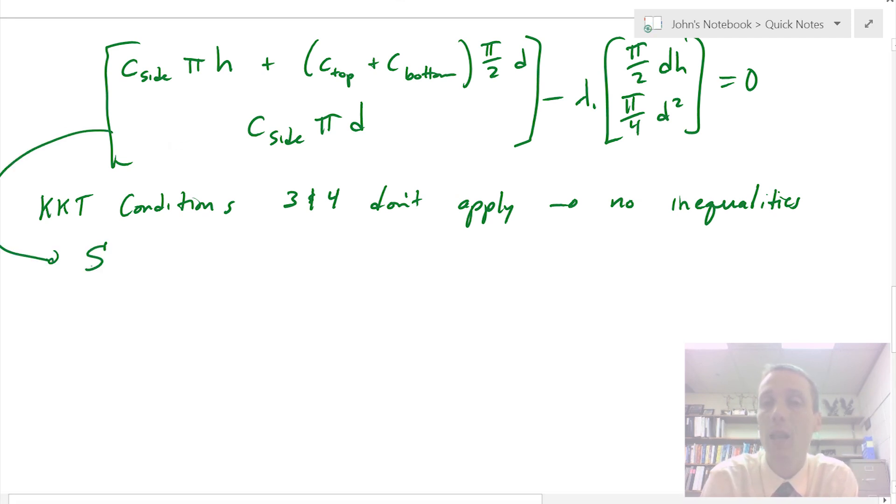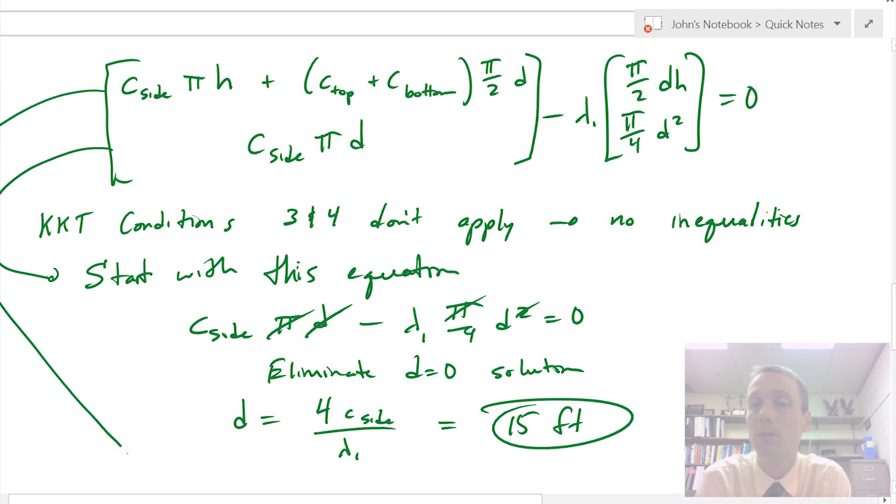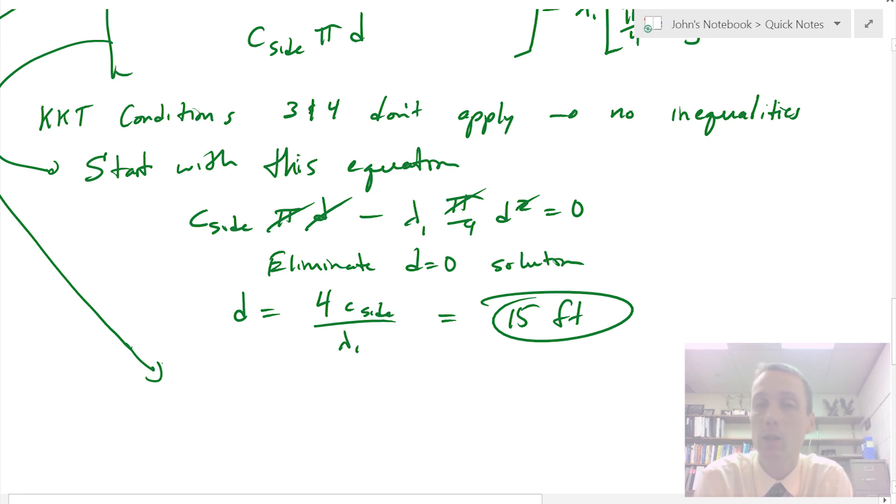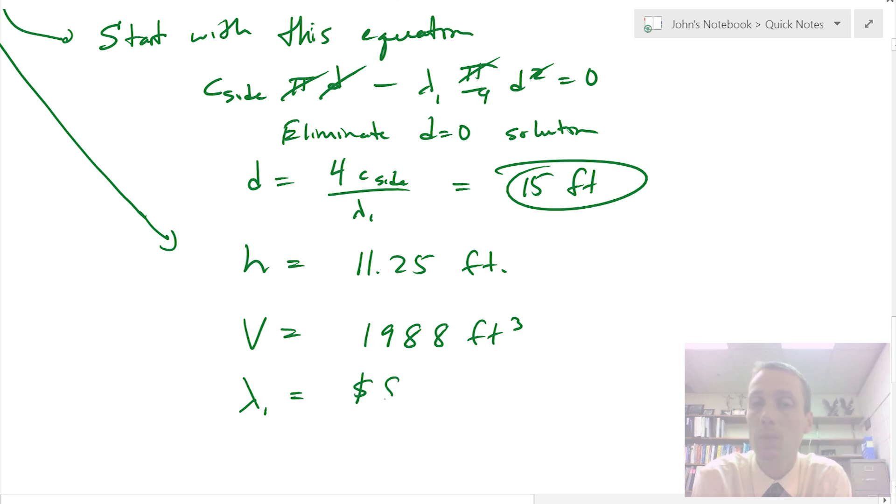Now I'm going to take this last equation, which is a function of one variable, diameter, that has to equal zero. First, I'll eliminate the solution that d equals zero. I know that's not a potential solution. Cancel the pi, and then d equals 4 times c_side divided by lambda 1. In this case, the optimal diameter is 15 feet. Using the next to last equation, the height is 11.25 feet. Finally, using the constraint, my volume is 1988 cubic feet, and my lambda is $8 per cubic foot. This is the solution to the problem.